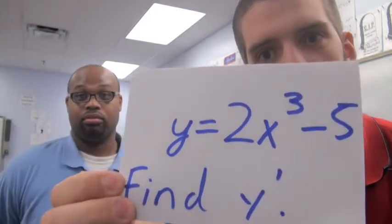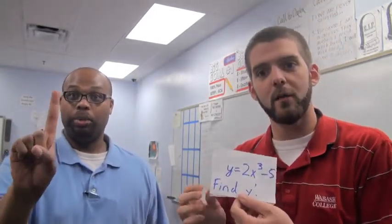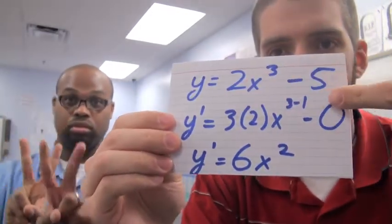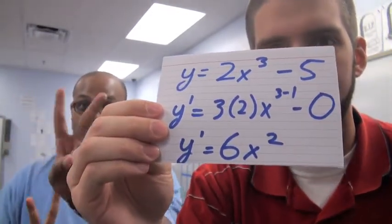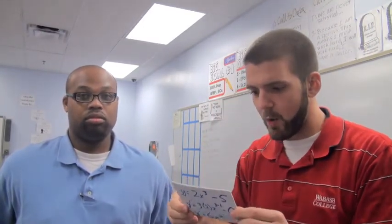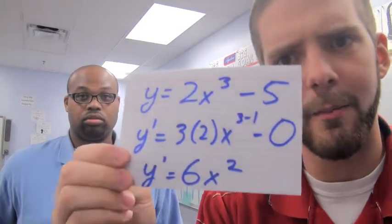We start by writing the problem on the front, and then we flip it over to the back for step 2, and there we write out our problem and all the steps to solve the problem. Step 3, we would take the problem from the front, and we would answer and study in our head, and then we would check our work on the back.